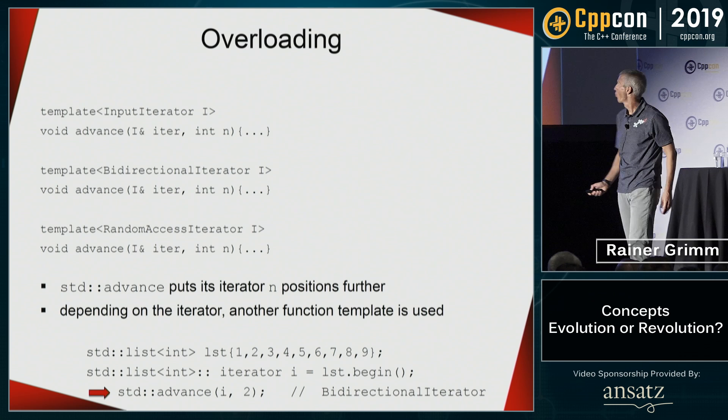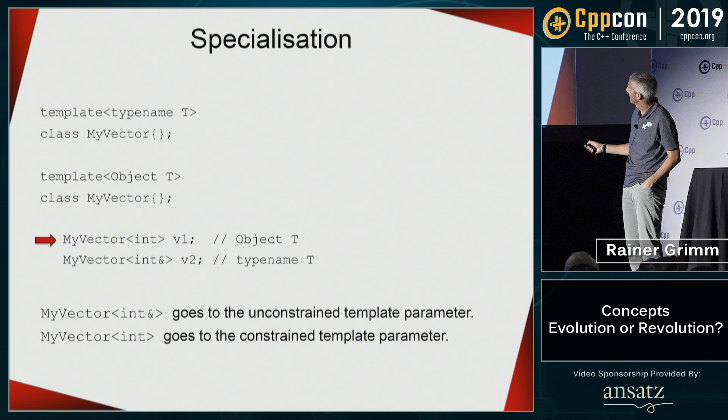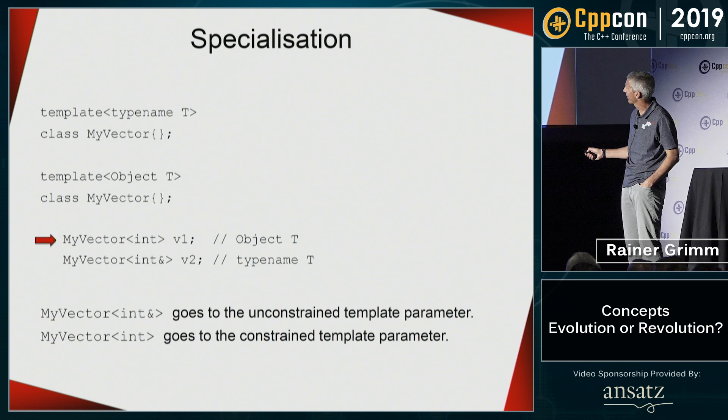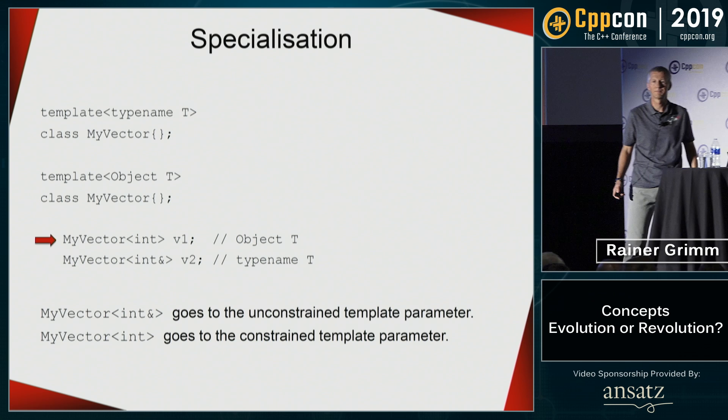You can also specialize on concepts. This is the primary template, and here is a partial specialization for object. When invoked with an object, it goes to this partial specialization; with a reference, it goes to the general one. All behaves as expected.